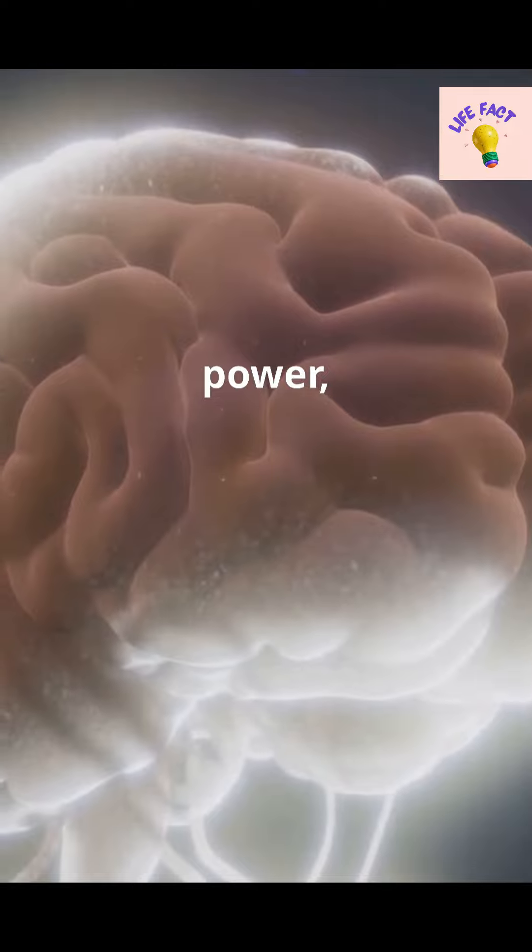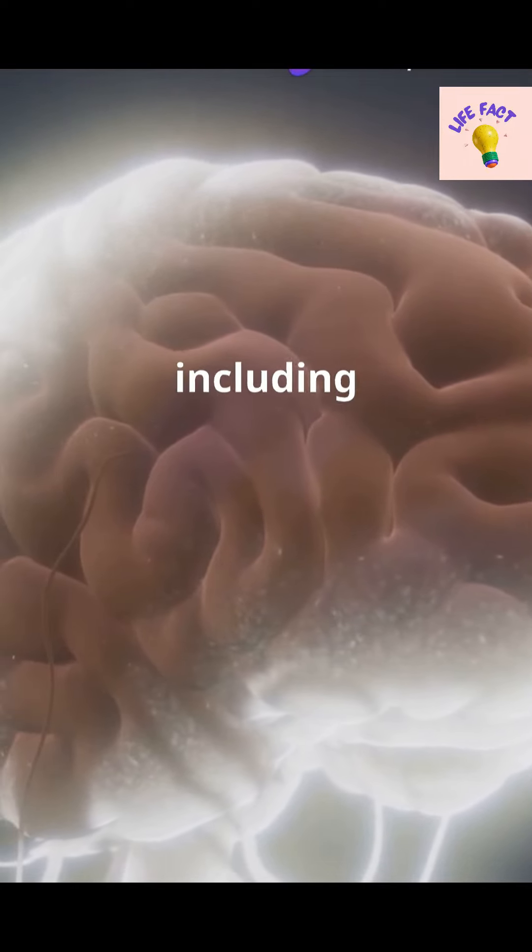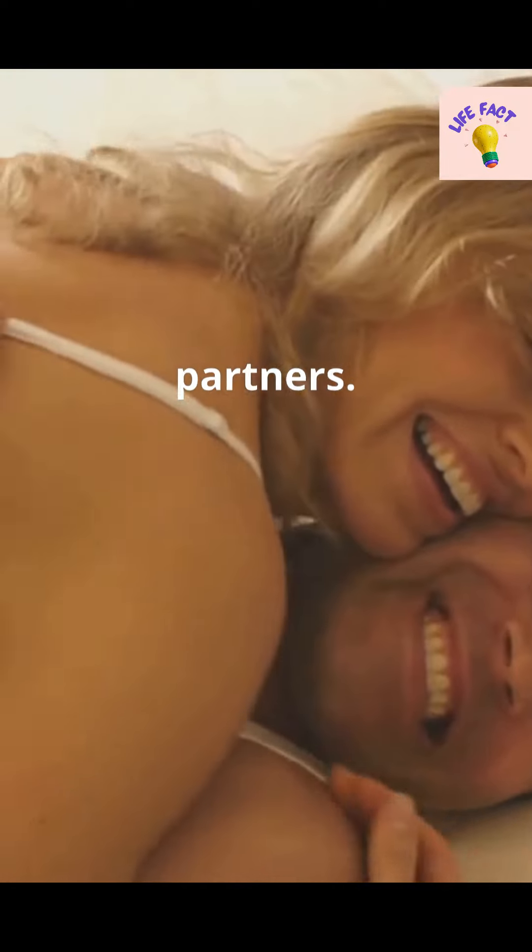And speaking of power, during an orgasm, the brain releases a cocktail of chemicals, including oxytocin, which is often called the love hormone. This not only feels amazing, but also deepens bonds between partners.